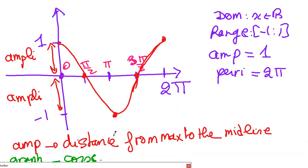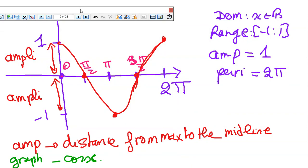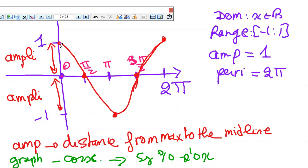Now if I want to graph minus cosine x using cosine x, the graph of minus cosine x is the symmetry of cosine x with respect to the x-axis. All we need to do is reflect over the x-axis. Points on the x-axis stay in place, the maximum becomes a minimum, and the minimum becomes the maximum. Joining the reflected points gives us the green function, which represents minus cosine x.